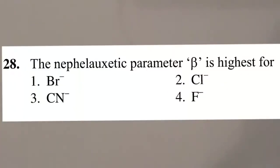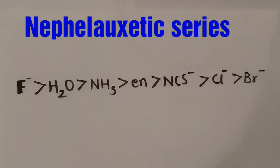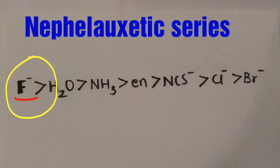Question 4: the nephelauxetic parameter beta is highest for which ligand? The nephelauxetic series is shown. Therefore, the highest value of beta is for the fluoride ion.